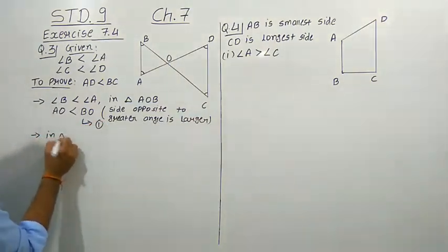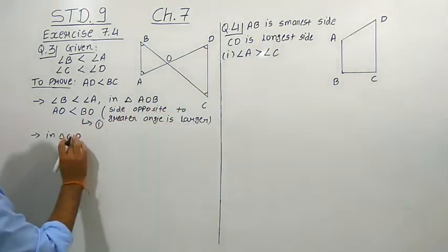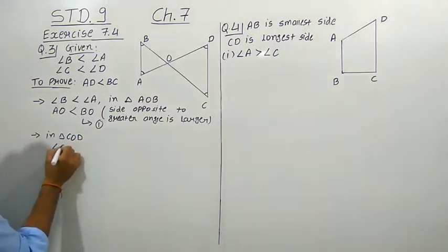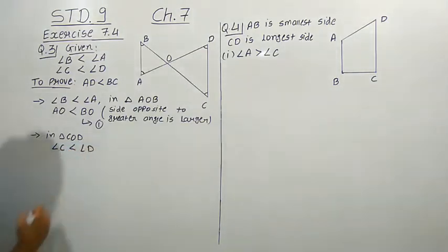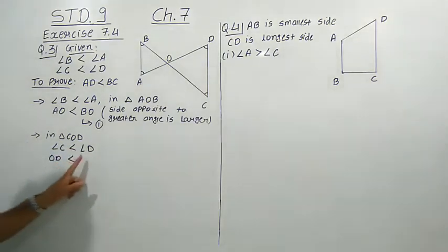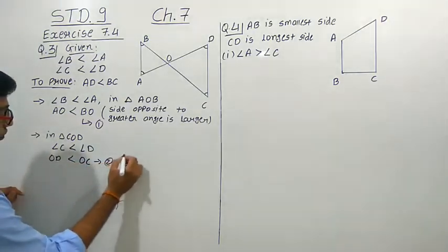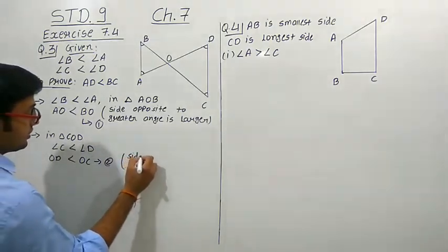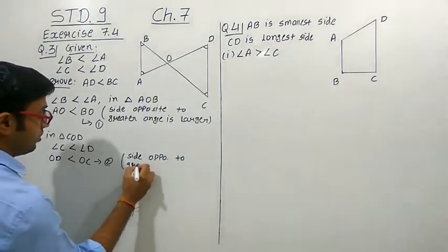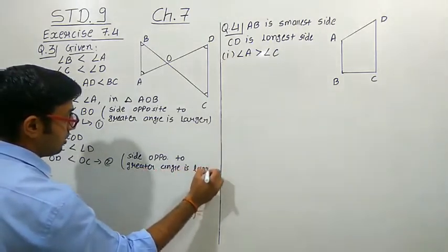In the same way, in triangle COD, we have given that angle C is less than angle D. So the opposite side of angle C is OD, and the opposite side of angle D is OC. Therefore OD is less than OC. Give it inequality number 2. Reason: side opposite to greater angle is larger.